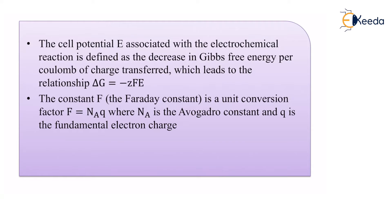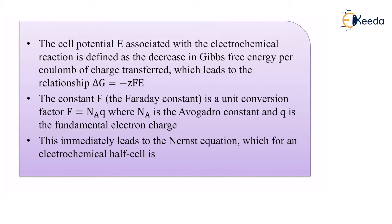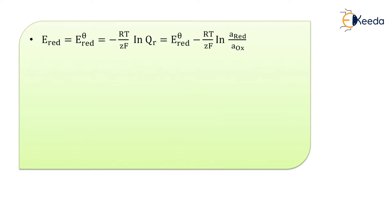The constant F is known as Faraday's constant and is a unit conversion factor F = NA × q, where NA is Avogadro's number — also known as Avogadro's constant — equal to 6.022 × 10²³, and q is the fundamental electron charge. This immediately leads to the Nernst equation for an electrochemical half cell: E-reduction equals E°-reduction minus RT divided by ZF times ln(QR).